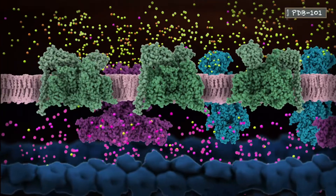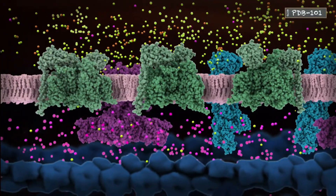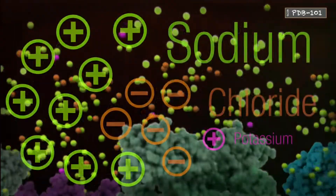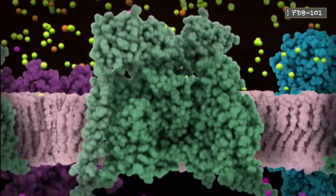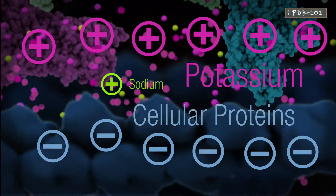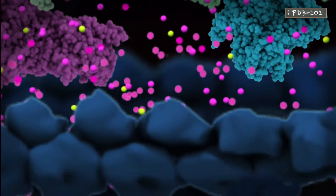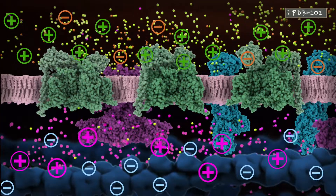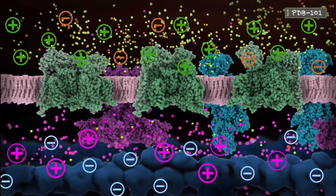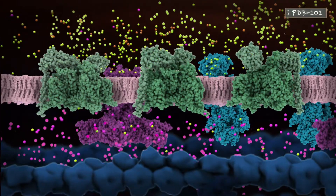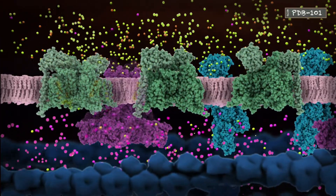There is one other kind of gradient here: a gradient of charge. The positive charges on the outside are balanced to some degree by the chloride ions. On the inside, the positive charges are balanced to a better degree by the net negative charges of cellular proteins. This creates a positive charge on the outside of the neuron relative to the inside — a difference in charge across the membrane that we call a voltage.